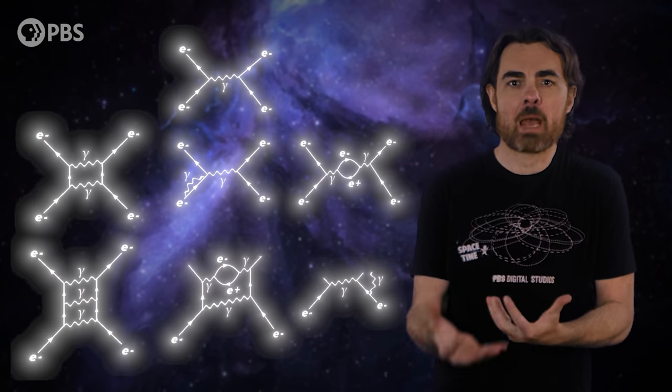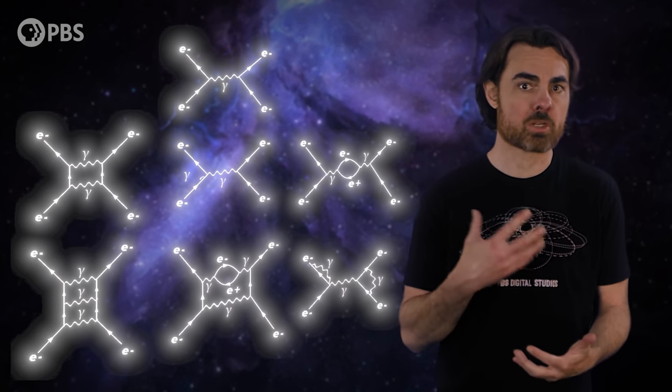We depict these interactions in Feynman diagrams. Each Feynman diagram represents one family of ways that the interaction could proceed, and the sum of all possible Feynman diagrams gives you the interaction strength. For a deeper dive into Feynman diagrams, virtual particles, and quantum electrodynamics, we have you covered episode list in the description.